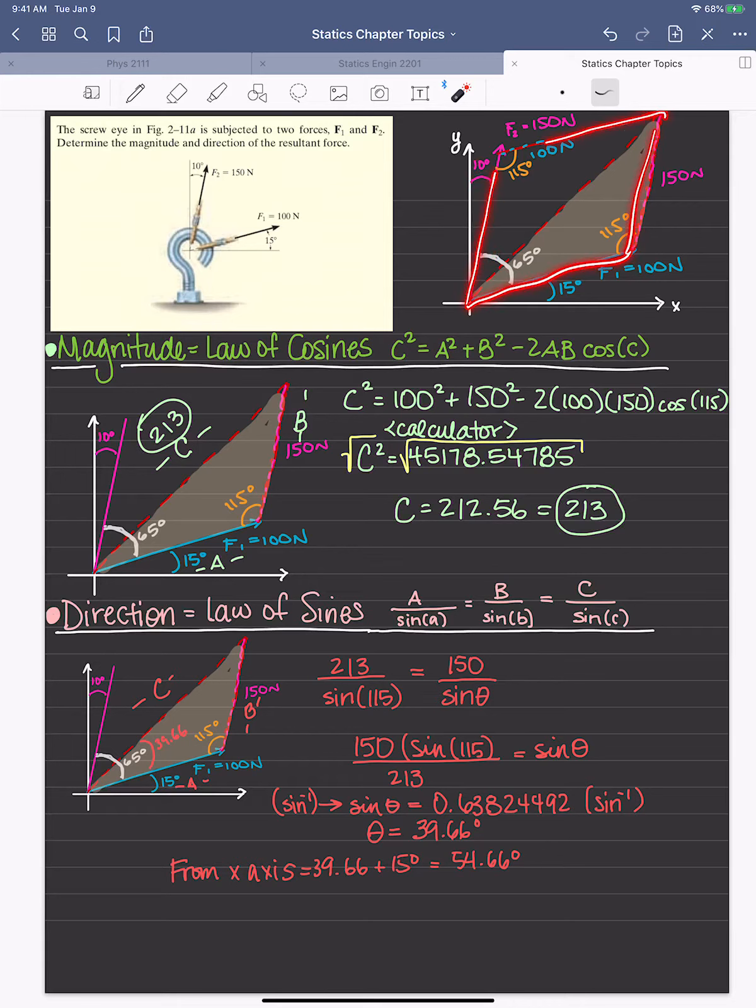And because we know a parallelogram should total 360 degrees, we're able to determine that this is 115 degrees here.